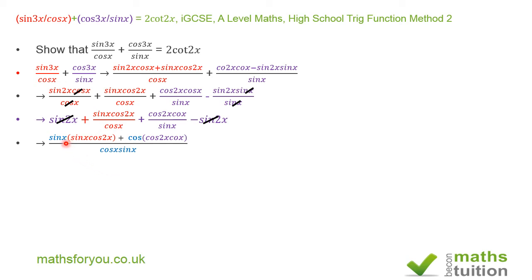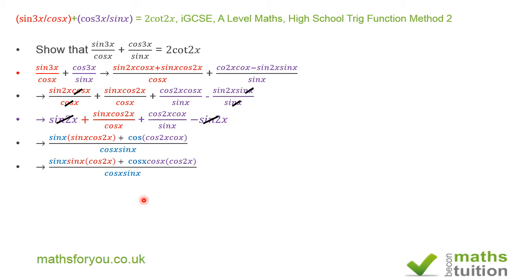Now I can factorize this expression: sin(x)·sin(x)·cos(2x) plus cos(x)·cos(x)·cos(2x), divided by cos(x)sin(x). Sin(x) times sin(x) gives sin²(x), and cos(x) times cos(x) gives cos²(x). So I then have cos(2x) times the quantity sin²(x) plus cos²(x), divided by cos(x)sin(x).